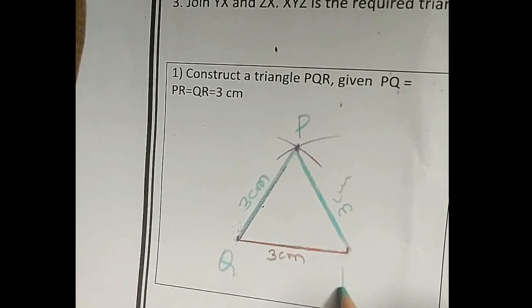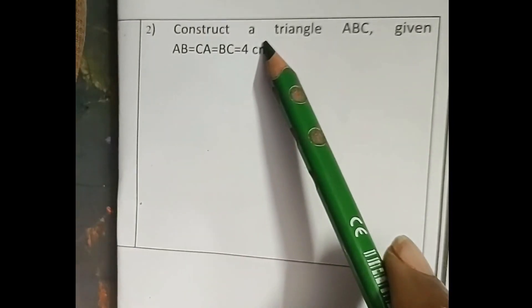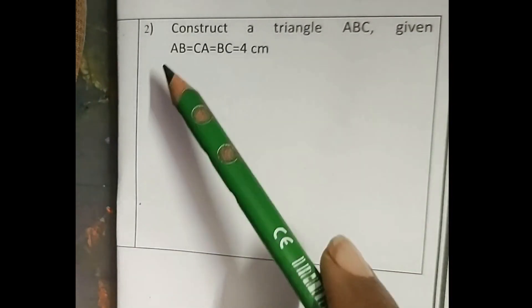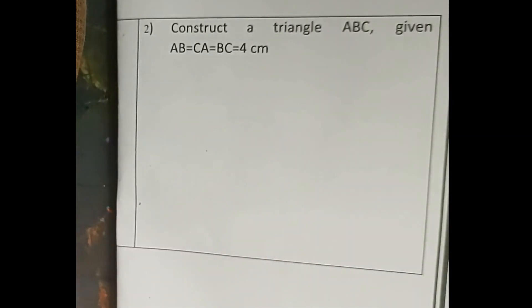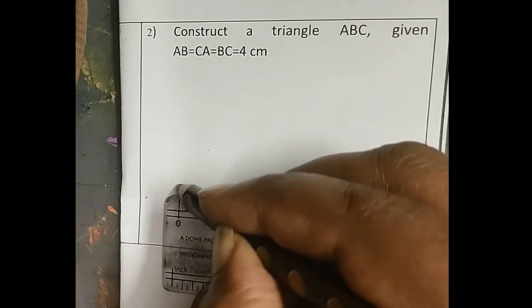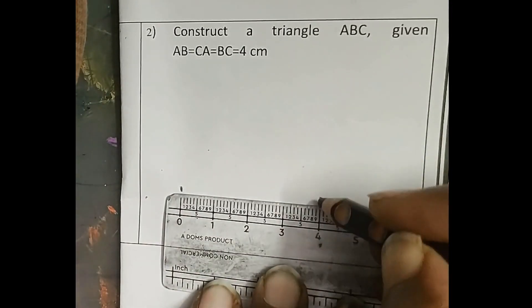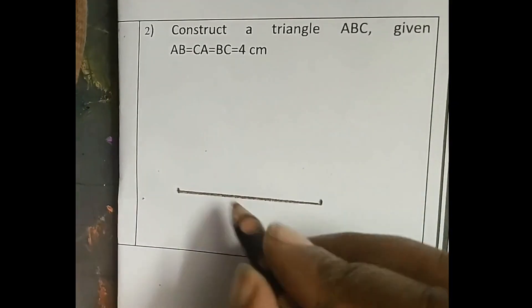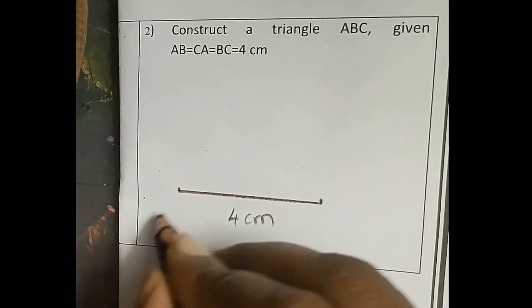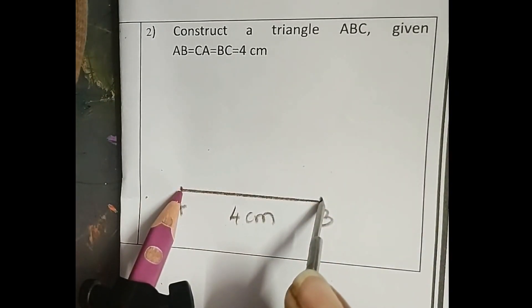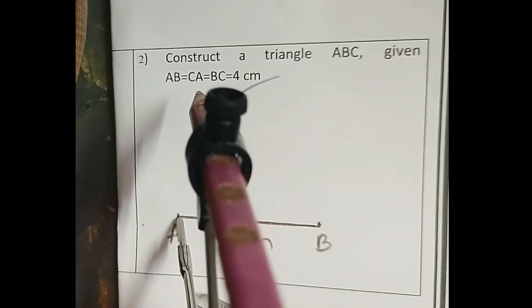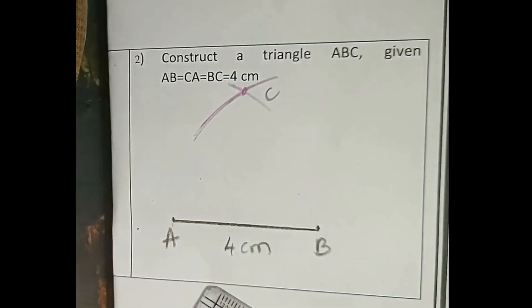Each side is 3 cm. We label this triangle as P, Q, and R. Let's move to the second question: Construct triangle ABC given AB is equal to CA is equal to BC is equal to 4 cm. We draw a line of 4 cm, label A and B. We measure 4 cm in the compass, draw an arc from B and an arc from A. Here is point C. We join AC and BC.